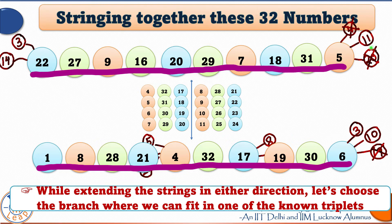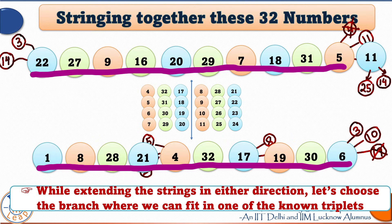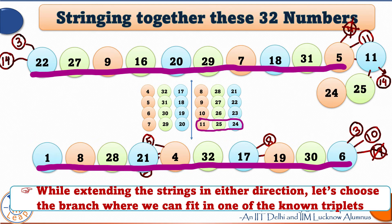So, to the right of 5, we need to have the number 11. 11 can be followed by 14 or by 25. So, we choose 25. Look at the triplet 11, 25, 24. So, we add 24 beyond 25. 24 can be followed by 12 or by 1. Let me choose 12 here.